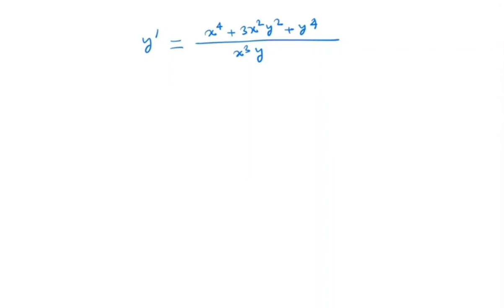Notice that each term in the numerator has degree 4. x⁴ has degree 4, x²y² has degree 4, y⁴ has degree 4. Similarly, the denominator term x³y also has degree 4. So, we can conclude that the given function is a homogeneous function of degree 0.